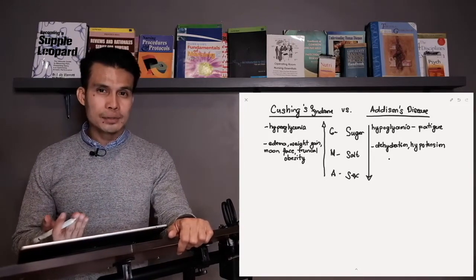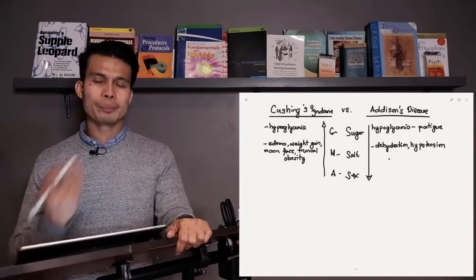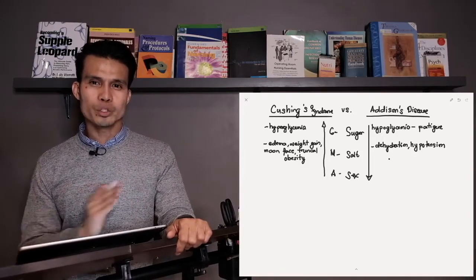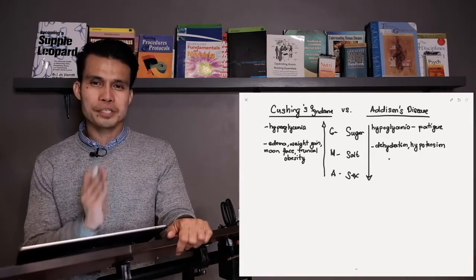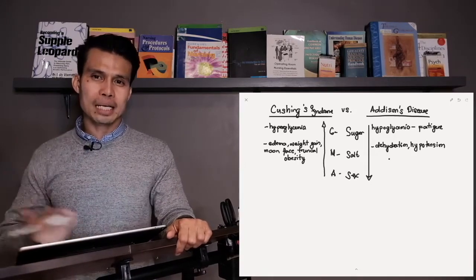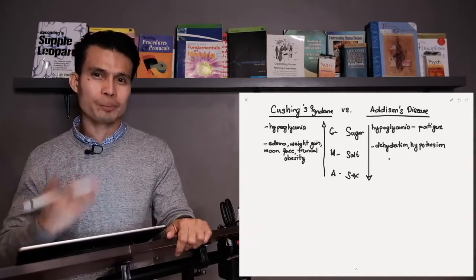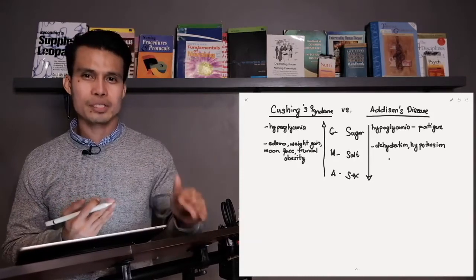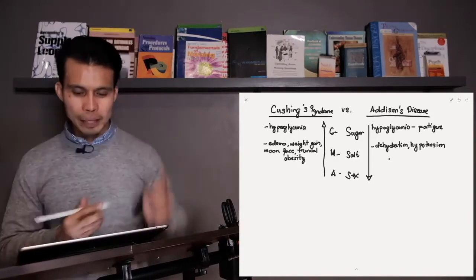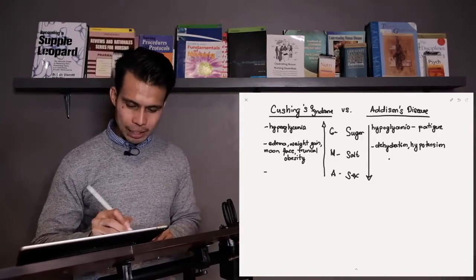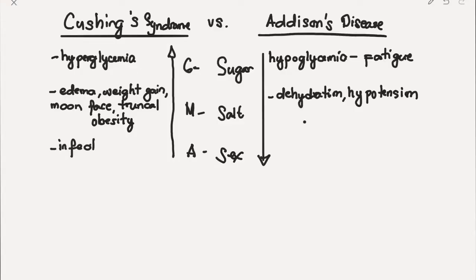Remember, nurses, that steroidal hormones are immunosuppressant. Where should we place infection? Obviously in the client with increased steroidal hormones — so infection belongs in Cushing's syndrome. Steroidal hormones are increased in Cushing's and since they are immunosuppressant, infection is expected.